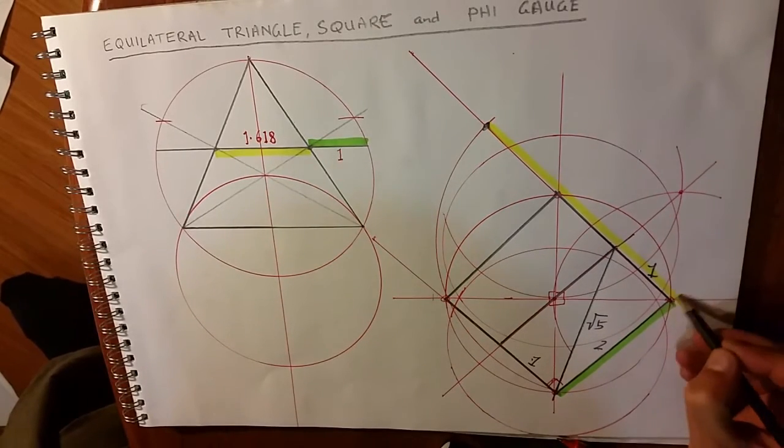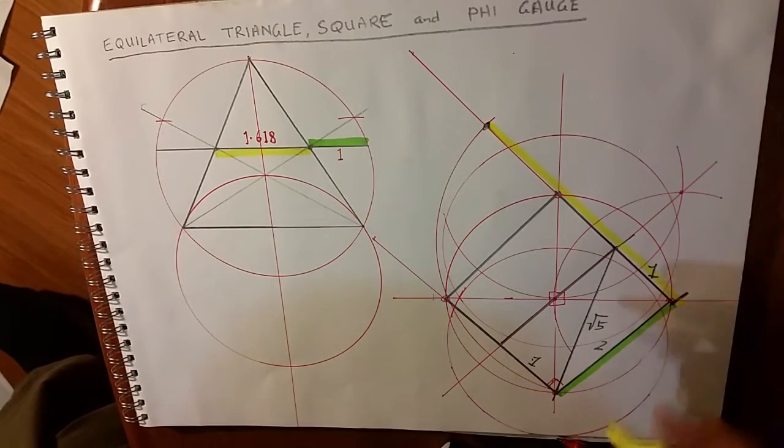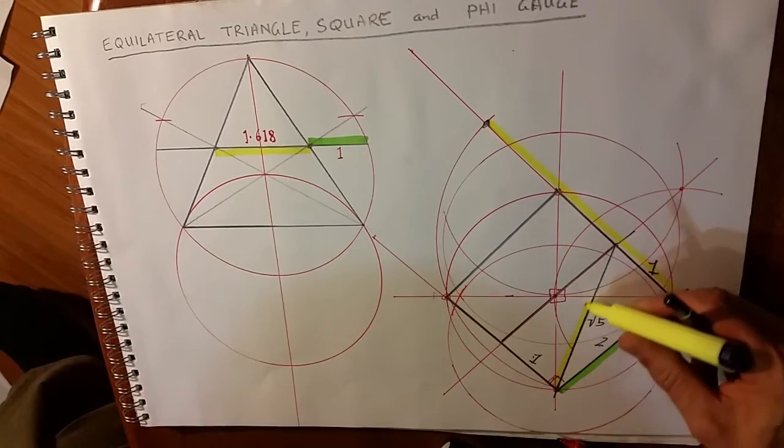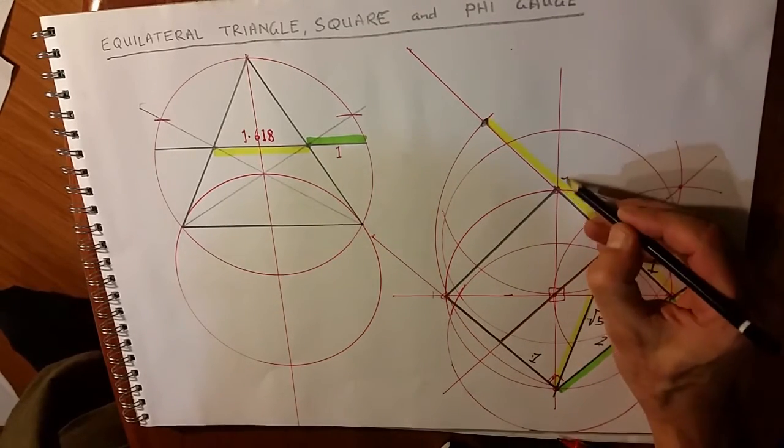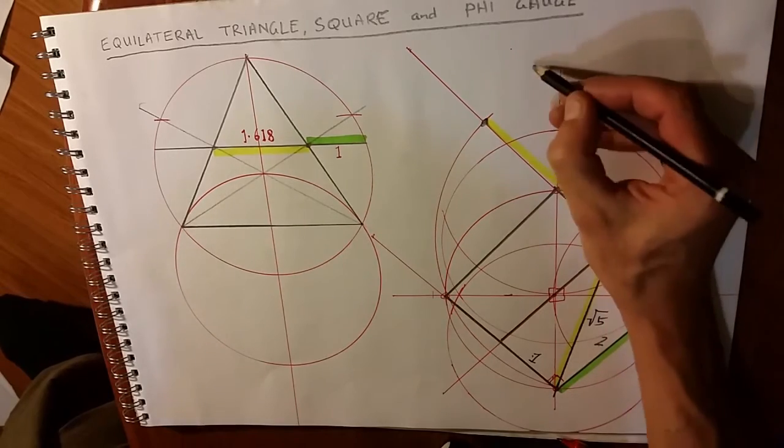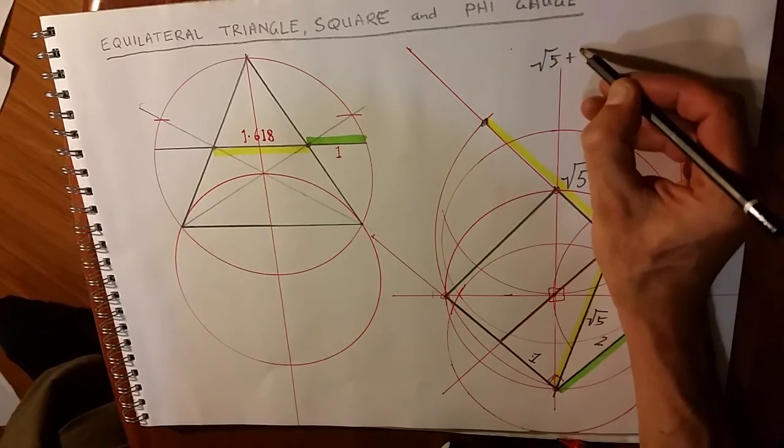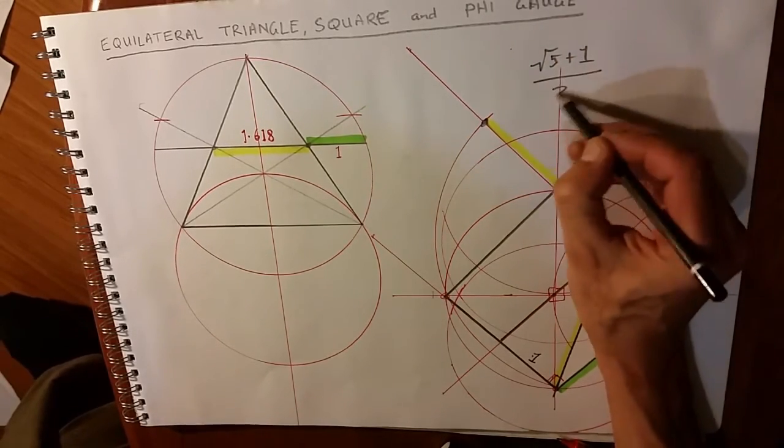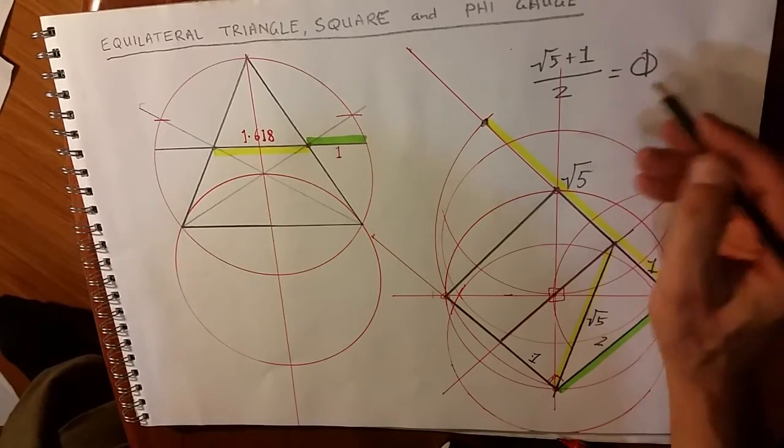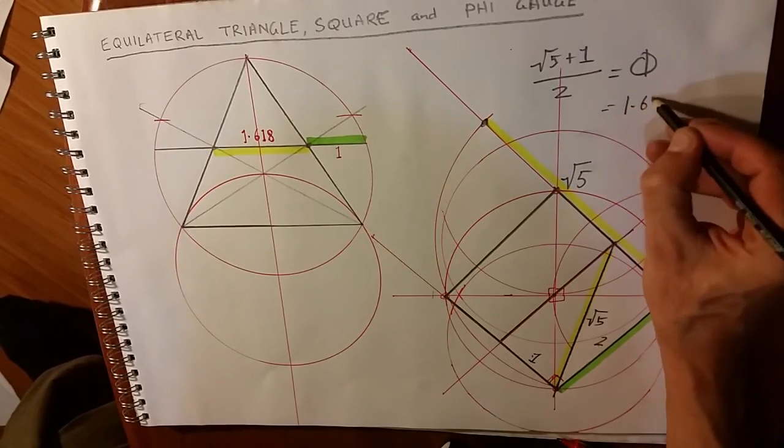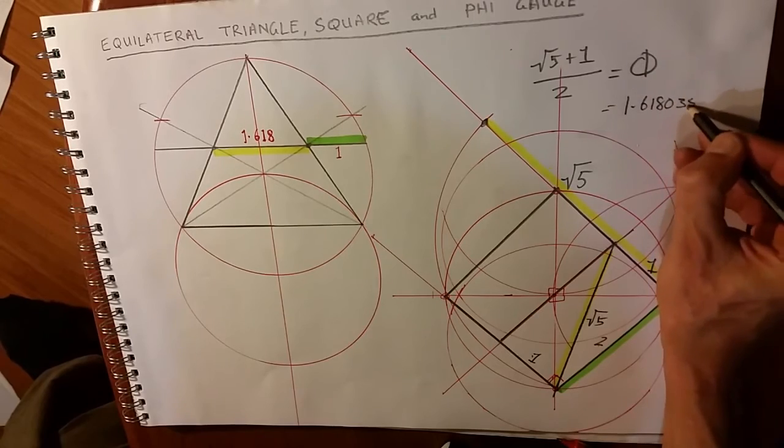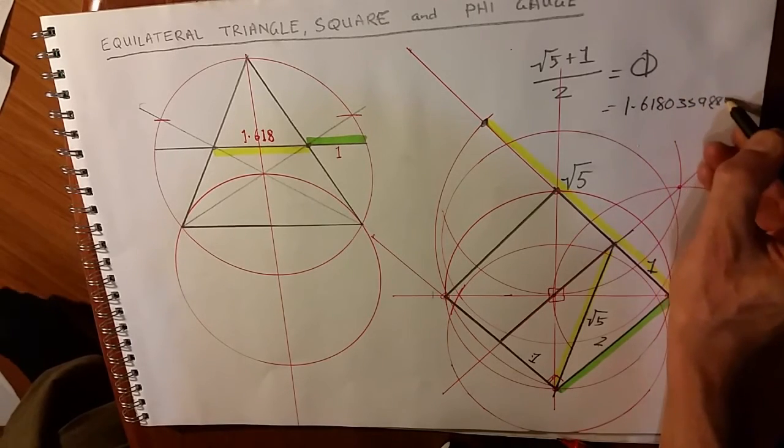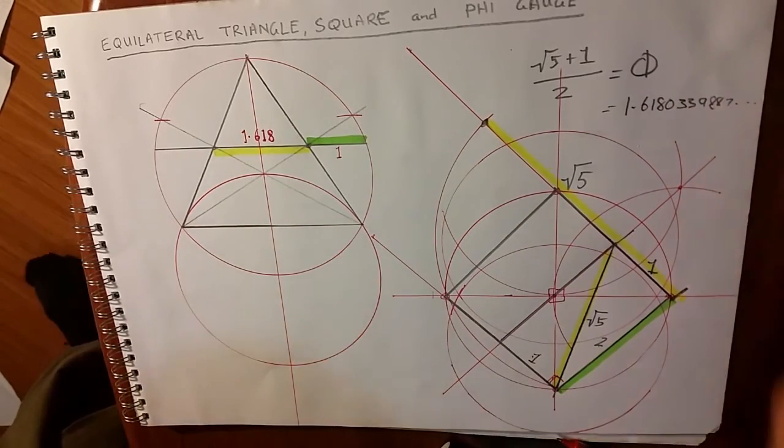Plus the square root of five. And the square root of five plus one divided by two equals phi, or 1.6180339887 etc.